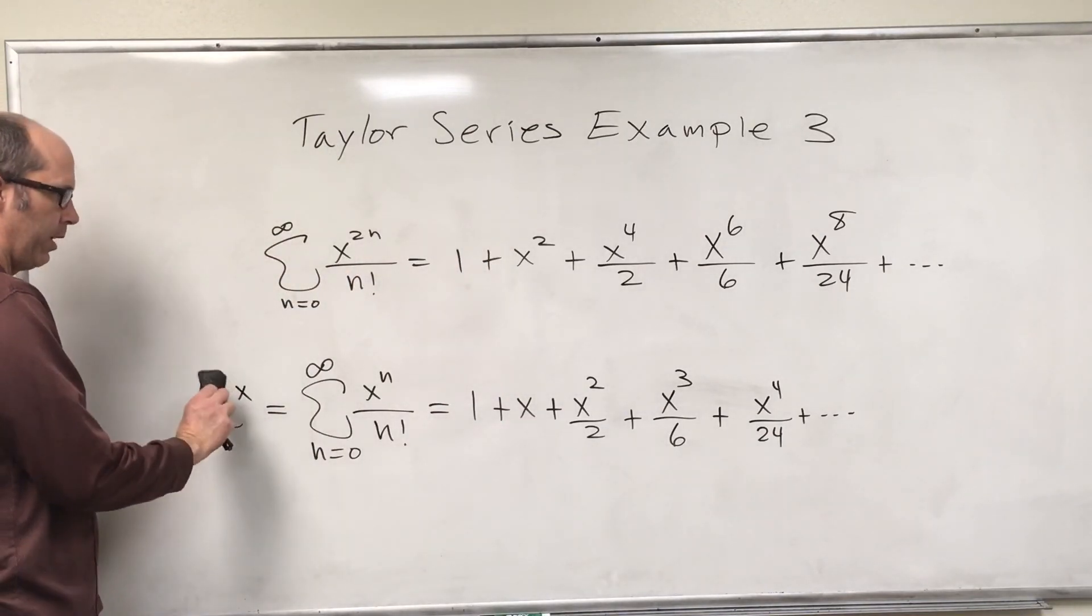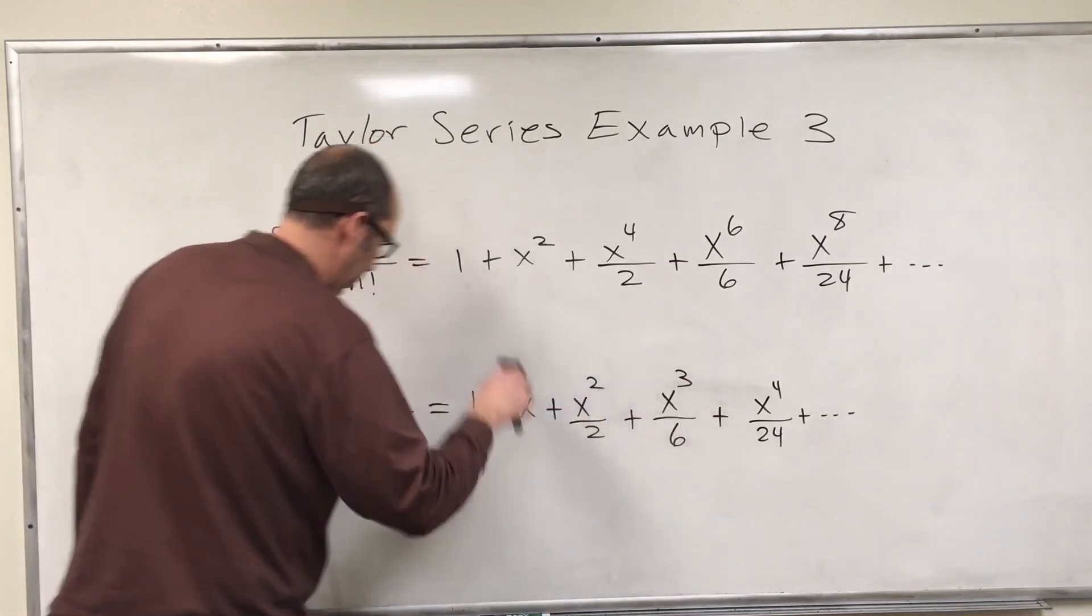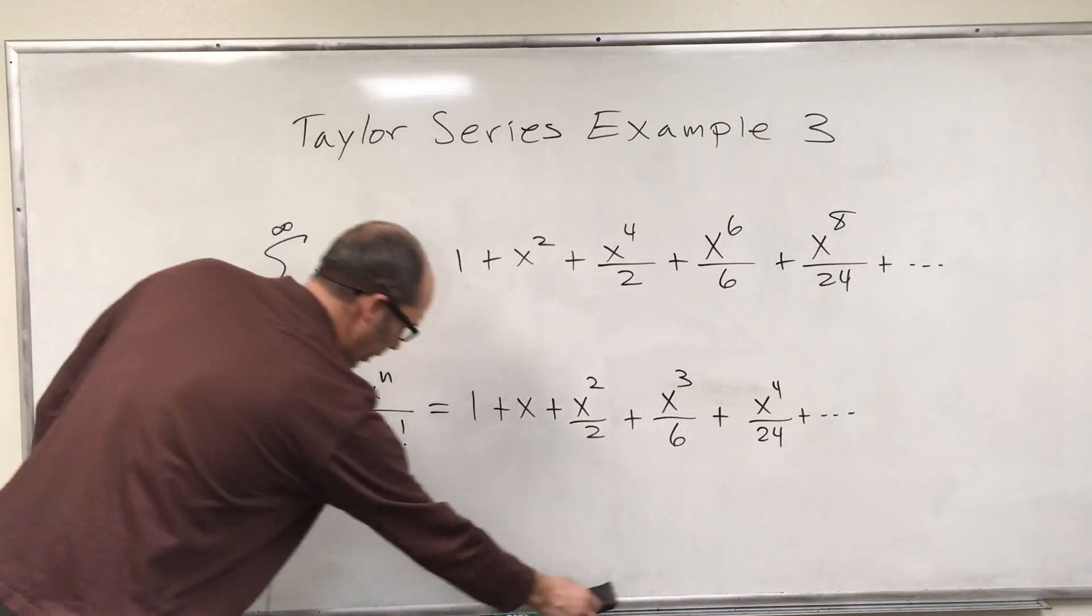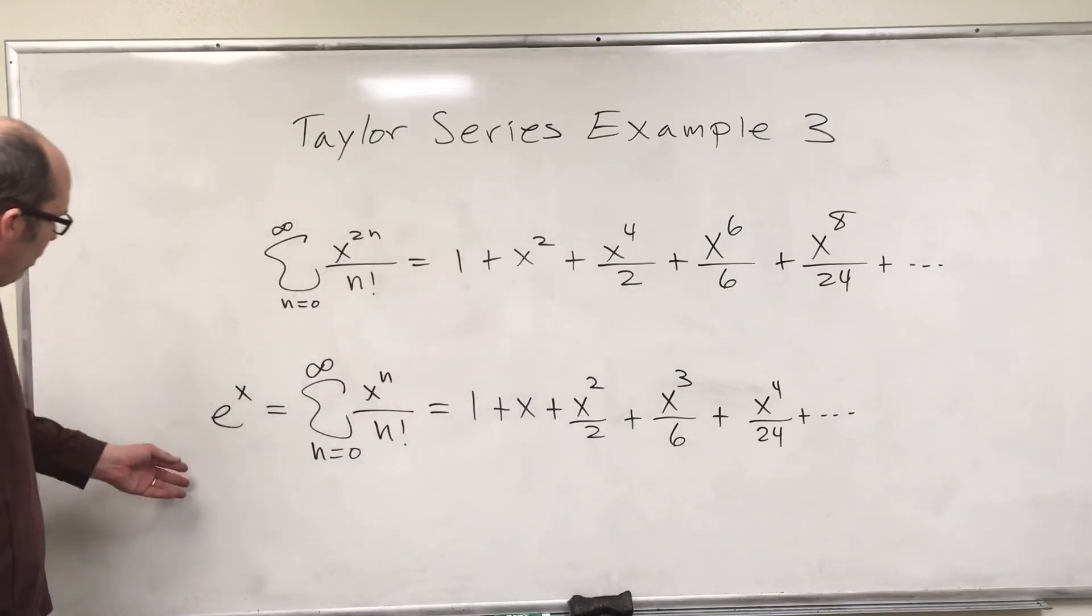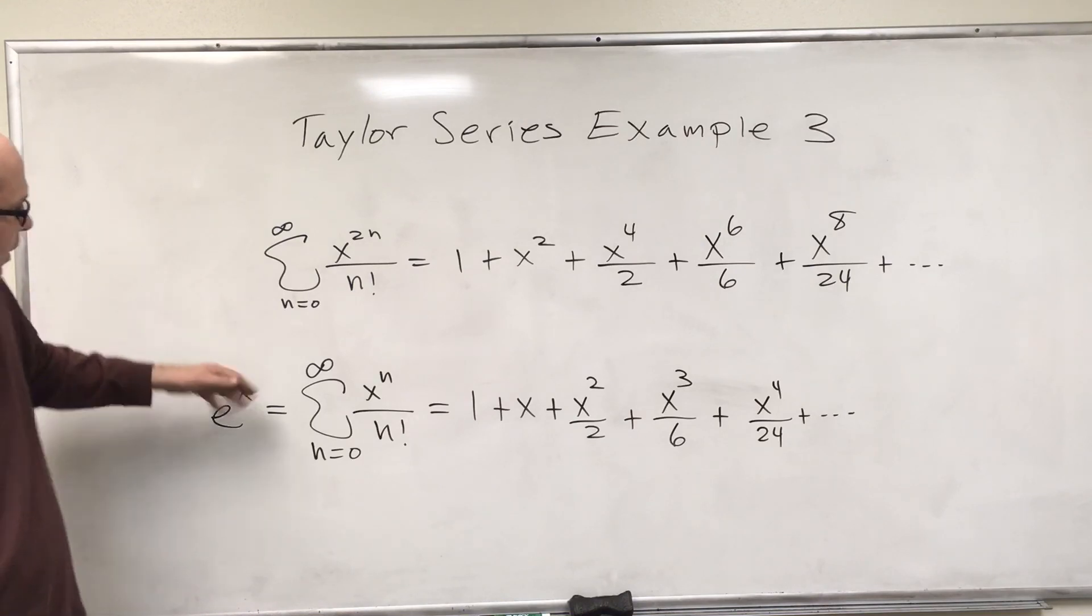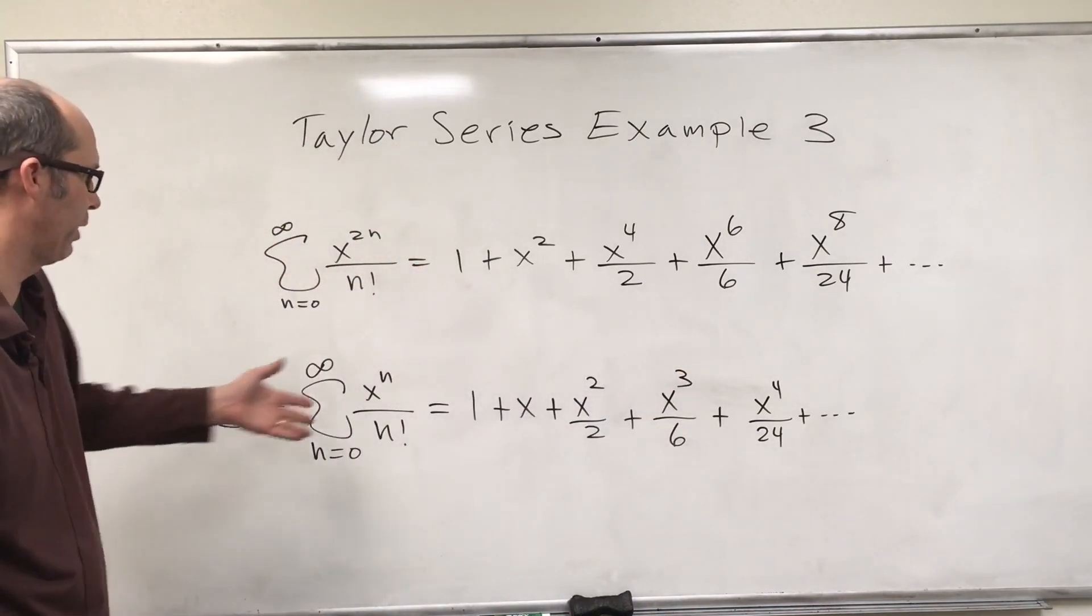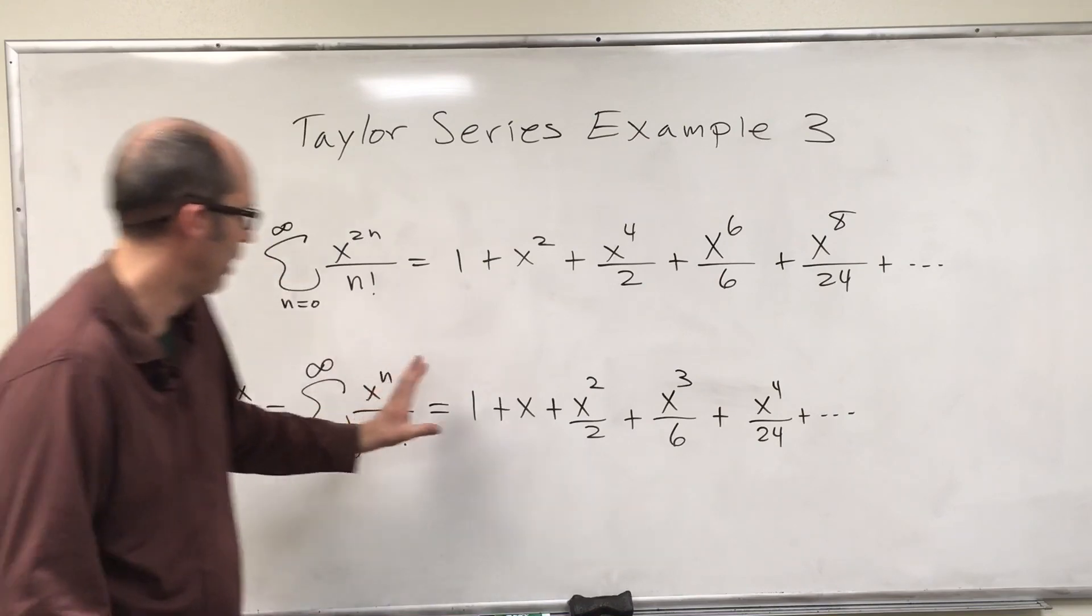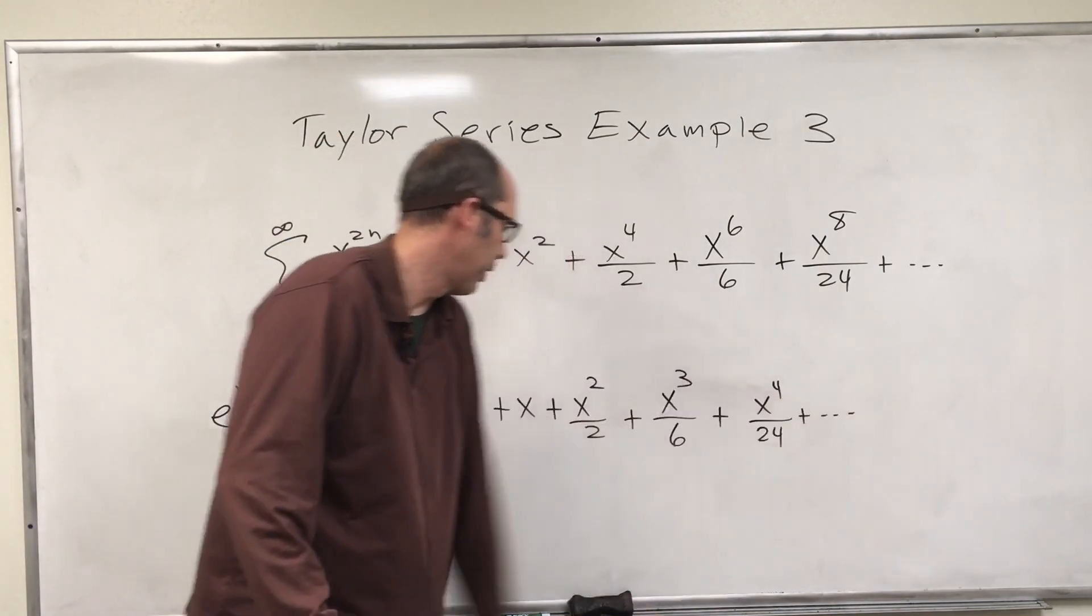Thinking of x as a placeholder, we can put whatever we want in there. This is because the interval of convergence for e to the x is negative infinity to infinity. You can put any real number in there and this will converge to an actual number.